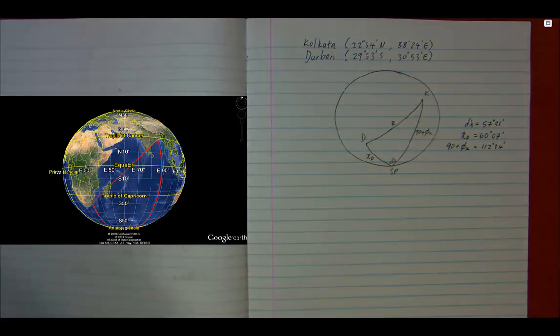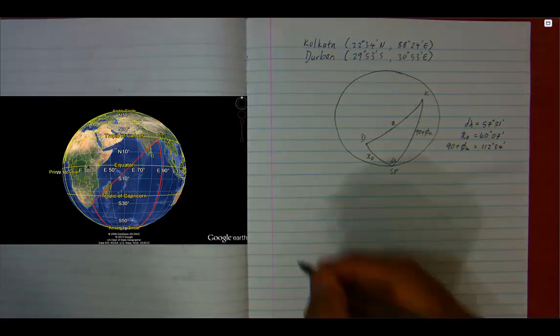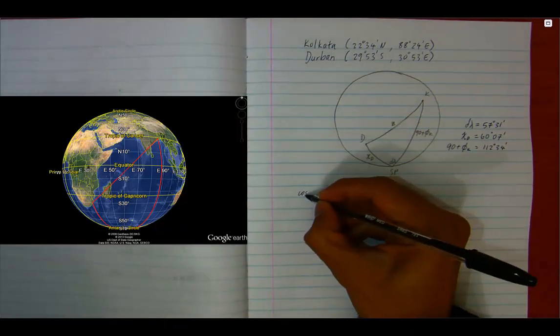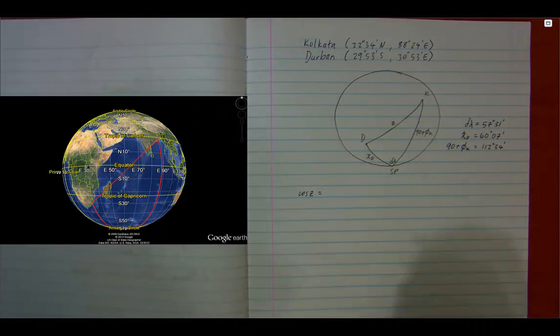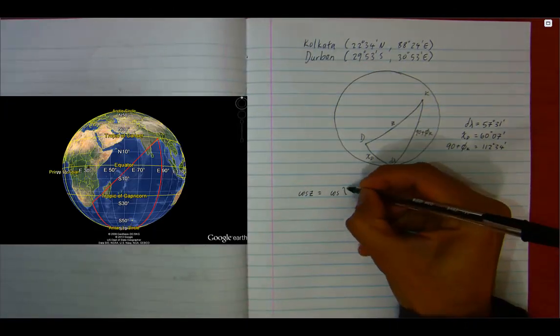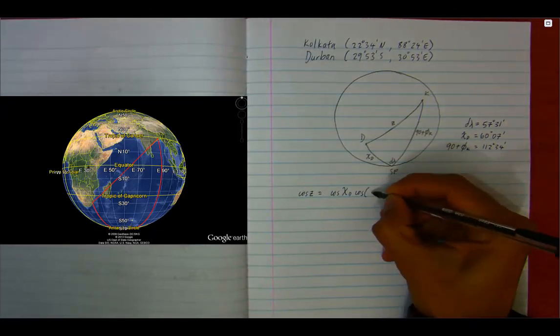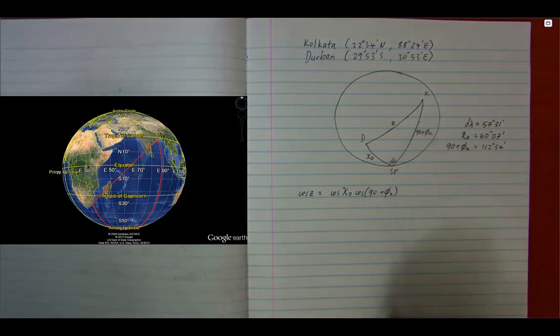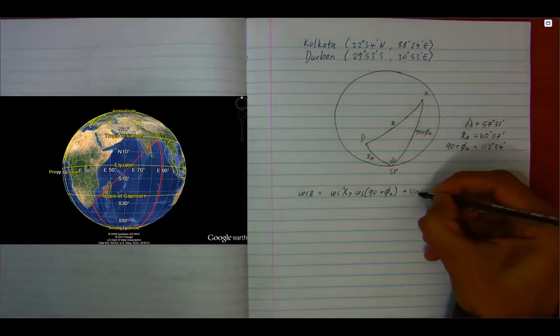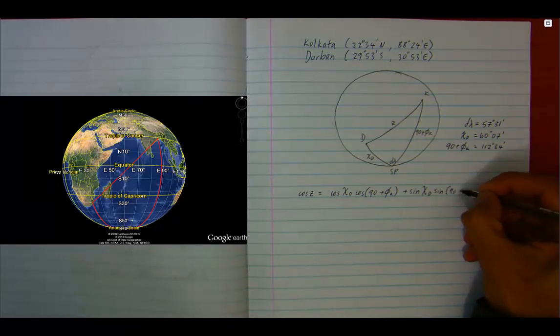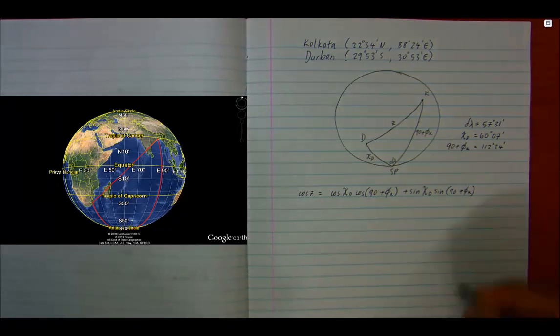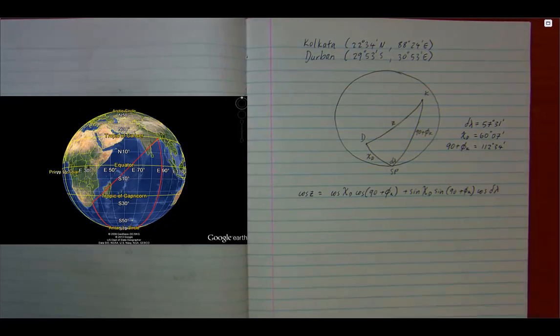Now we have enough information in the spherical triangle to be able to use the cosine rule of spherical trigonometry. Since we know chi of Durban, 90 plus phi of Kolkata, and d-lambda, we can solve for z.